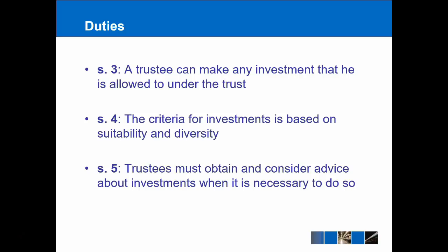Section 1(1) of the Trustee Act 2000 is backed up by sections 3, 4, and 5. Section 3 says a trustee can make any investment allowed under the trust. Section 4 says the criteria for investments is based on suitability and diversity — not putting all your eggs in one basket — and suitability relates to whether low or high risk investment is appropriate. Section 5 talks about considering and obtaining advice, similar to what was discussed in Pitt v Holt, now also represented in statute.